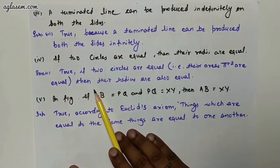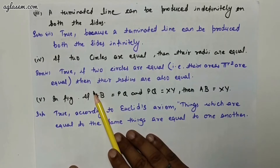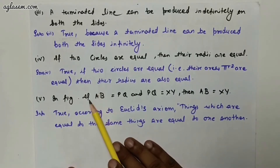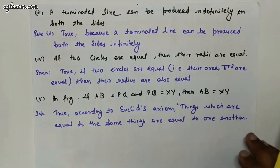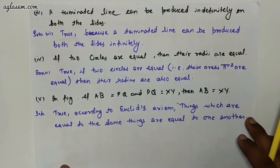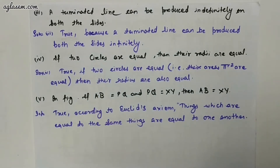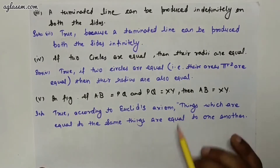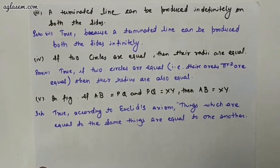Part four: if two circles are equal, then their radii are equal. The statement is true. If two circles are equal, i.e., their areas pi r squared are equal, then their radii are also equal.